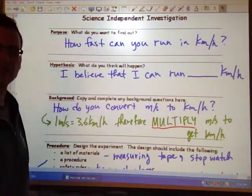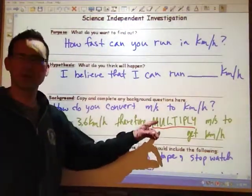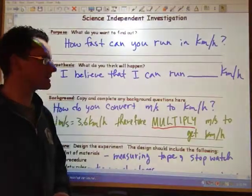Therefore, when you have your speed in meters per second—because that's what we'll be measuring out in the hallway—you simply multiply that answer to get kilometers per hour.